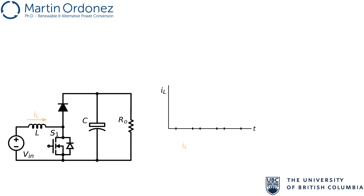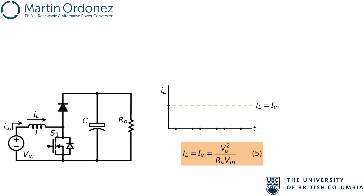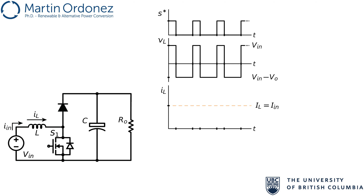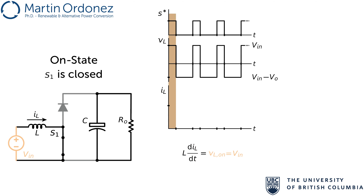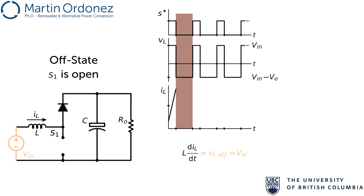The current in the inductor, IL, is equal to the input current, IN. The first step to find the inductor current is to consider its average value. Assuming 100% efficiency, the input and output power will be equal. Rearranging, the average inductor current can be expressed as the output voltage squared divided by the load resistance times the input voltage. The variation in the inductor current around the average value is controlled by the inductor voltage waveform. During the on time, the voltage in the inductor is the input voltage, a positive number. This causes the current to increase linearly until the switch is turned off. During the off time, the voltage applied to the inductor is the input voltage minus the output voltage, which results in a negative number. So the inductor current will decrease linearly to the same starting point, and the sequence repeats.